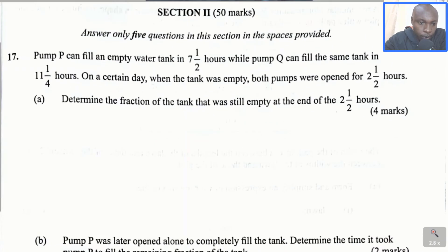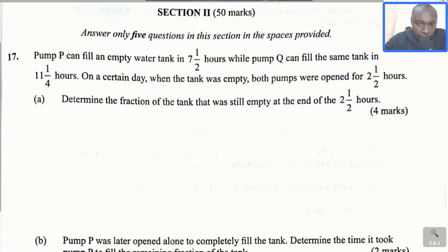Section 2, Question number 17. Pump P can fill an empty water tank in 7 and a half hours while pump Q can fill the same tank in 11 and 1 over 4 hours. On a certain day, when the tank was empty, both pumps were opened for 2 and a half hours. Part A: Determine the fraction of the tank that was still empty at the end of the 2 and a half hours.